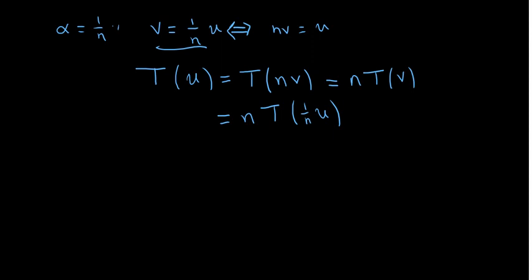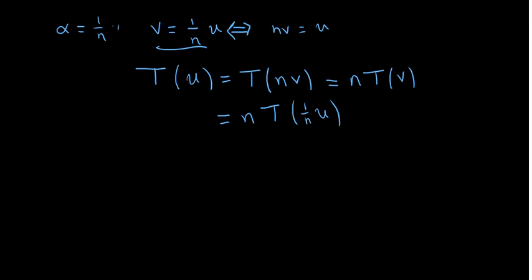Dividing both sides by n we obtain that (1/n)·T(u) = T((1/n)·u). Using the symmetry of equality, we can write this as T((1/n)·u) = (1/n)·T(u). This relation also holds, completing step 2.